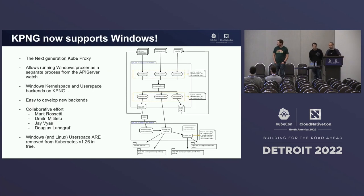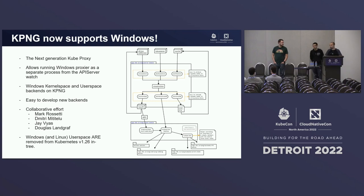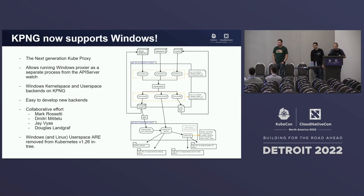Kaping now supports Windows — that's a pretty cool one. Jay, Dimitri, Mark, and Douglas have moved the kernel space proxy to Kaping, which is now a backend for Kaping. We now support both user space and kernel space in Kaping. Kaping, for those who don't know, is the next generation of kube-proxy and will allow a more scalable solution for the service proxy that Kubernetes provides. Note that the Windows and Linux user space modes are deprecated and will be removed in 1.26, so if you want to migrate, check out Kaping.